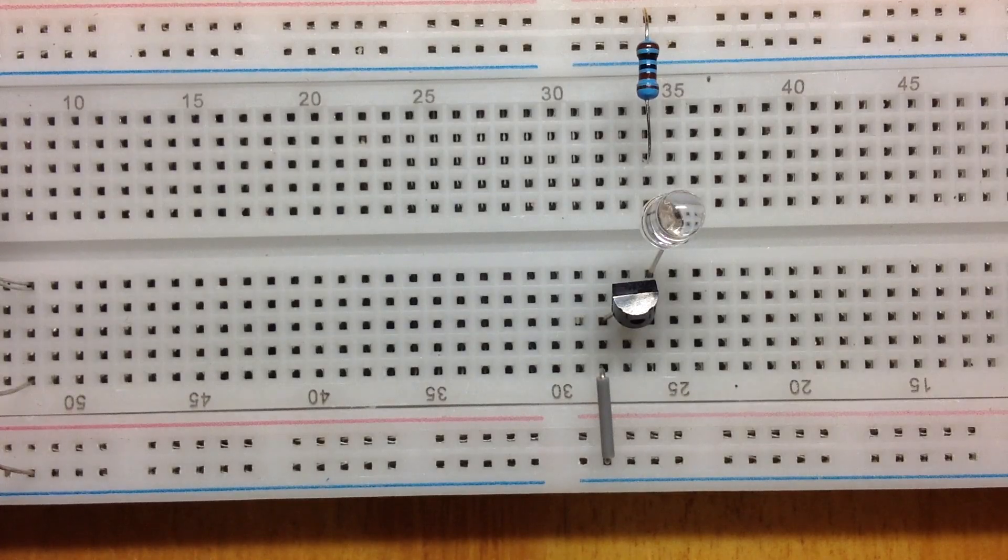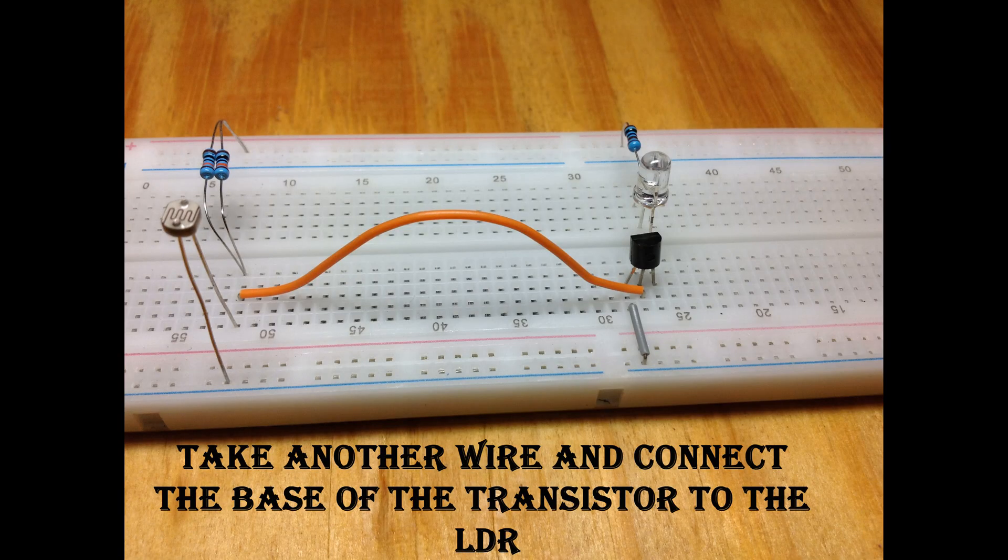Take another wire and connect the base of the transistor to the LDR.